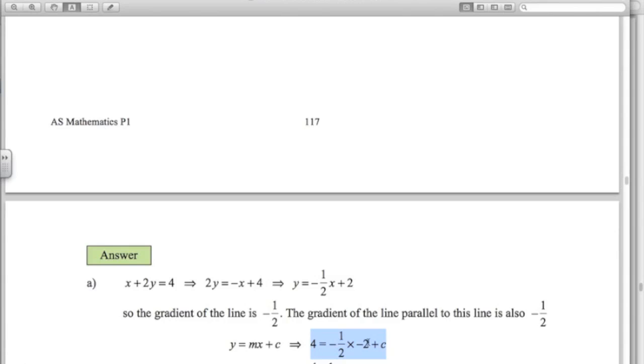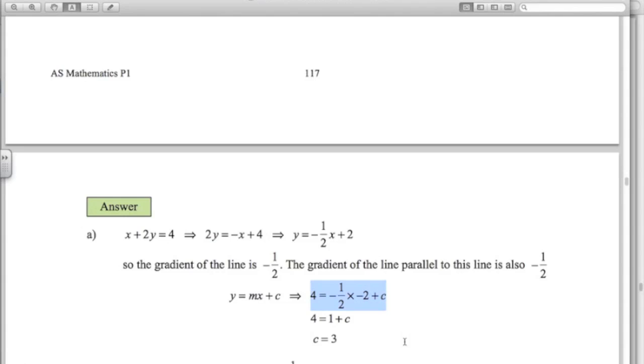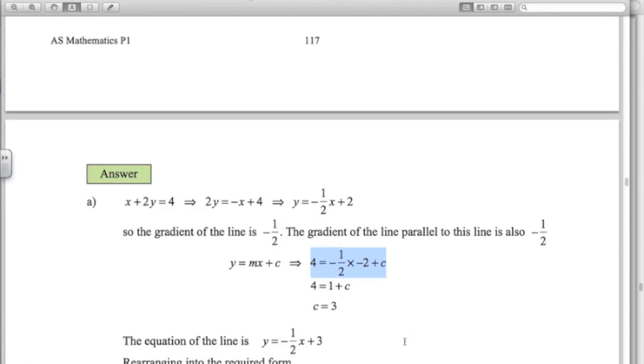Which gives me this. Negative 1.5 times negative 2 is 1. So c is equal to 3. So the equation of the line, negative 1.5x plus 3.